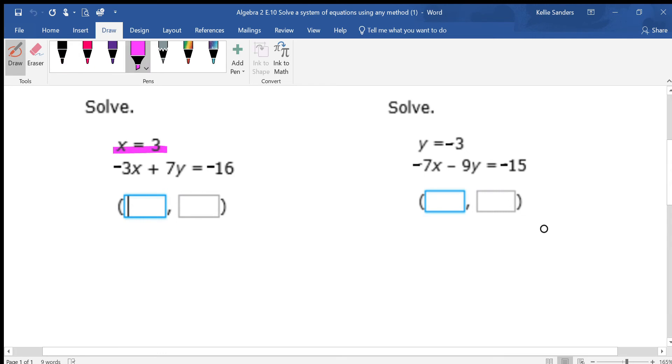So on this, they already tell you that x equals 3. If x equals 3, then we're going to put a 3 right there, and we're halfway finished. So we're going to put 3 in for x. Negative 3 times 3 plus 7y equals negative 16.